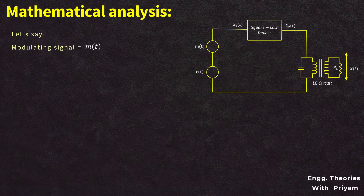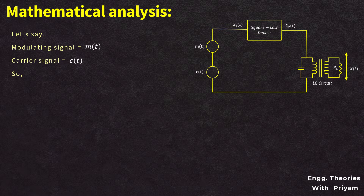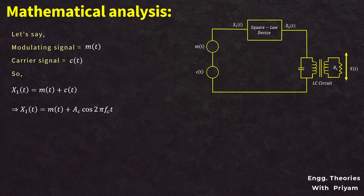For the mathematical analysis of the square law modulator, let the modulating or message signal be m(t) and the carrier signal be c(t). From the block diagram, both signals are given as inputs to the summer. The output of the summer is x1(t), which is the addition of the modulating signal and the carrier signal: x1(t) = m(t) + AC·cos(2πfc·t). This is equation number one.